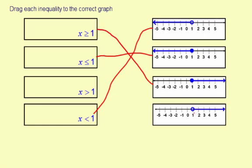And the fourth graph doesn't include 1, open circle, but it's the values greater than 1. So x is greater than 1 goes with this one right here.